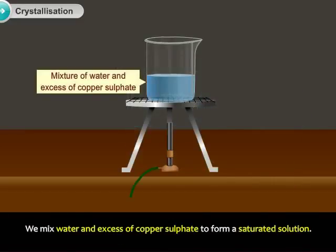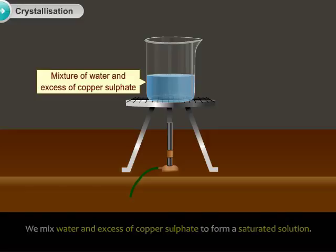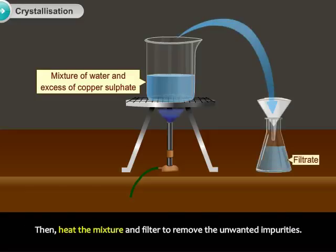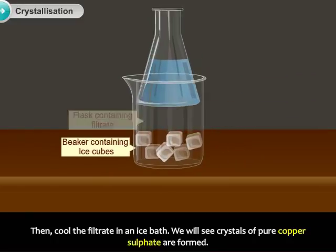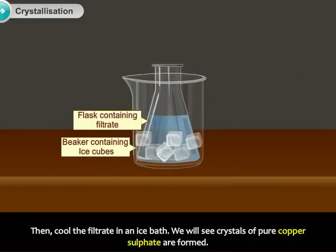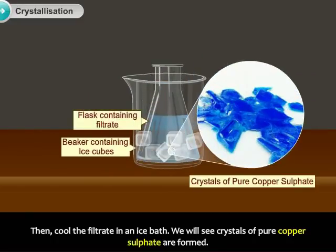We mix water and excess of copper sulfate to form a saturated solution. Then, heat the mixture and filter to remove the unwanted impurities. Then, cool the filtrate in an ice bath. We will see crystals of pure copper sulfate are formed.